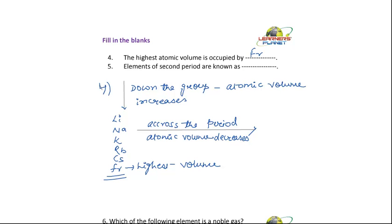And which will have the least volume in the periodic table? It would be fluorine, because that is the smallest atom, excluding hydrogen and helium.